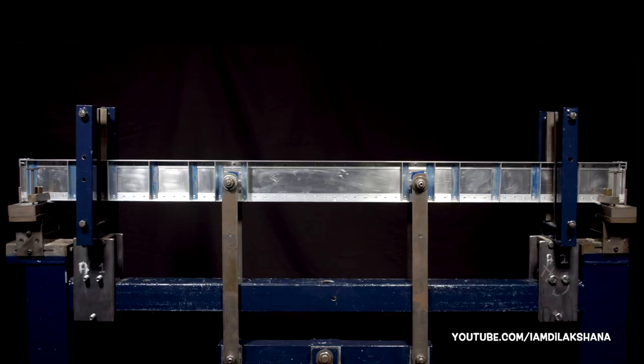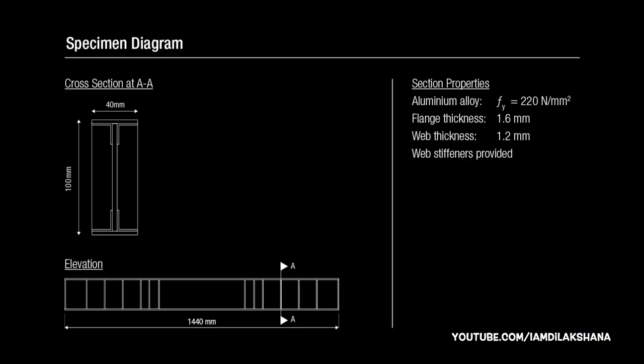This video shows a plate girder being tested under bending. The material used in the test is an aluminium alloy. The web has shear stiffness to prevent it from buckling.